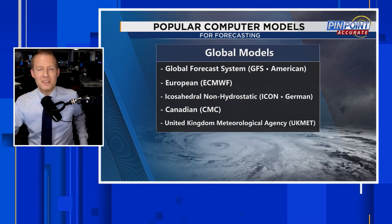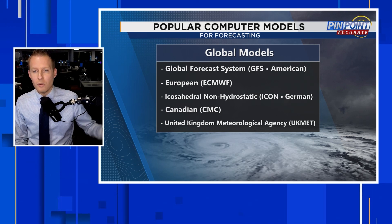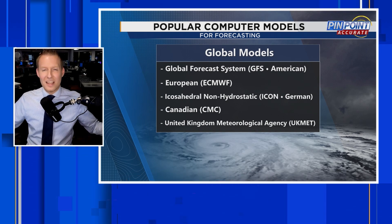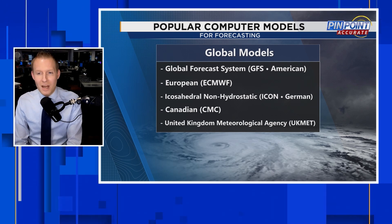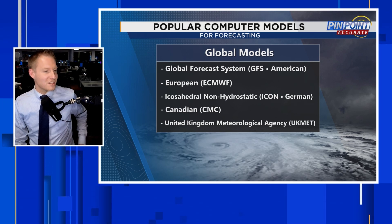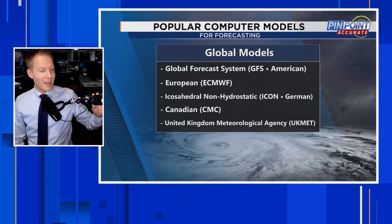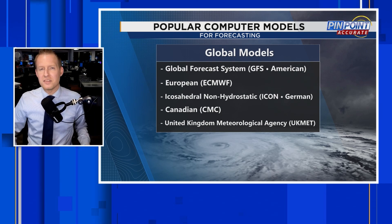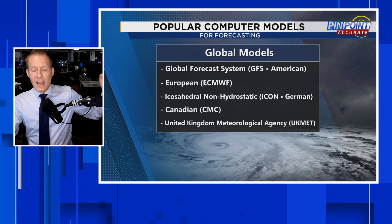You may be familiar with some of these, especially if you like to look at computer forecasts when we're talking about tropical systems. First and foremost, the American GFS — the Global Forecast System. The European model — everybody thinks it's king when it comes to tropical forecasting, though not so much in 2024. Then we have the ICON model, the German model, the Canadian CMC model, and the UK Met model, which is a decent short-range model but doesn't go out as far as the GFS or European.